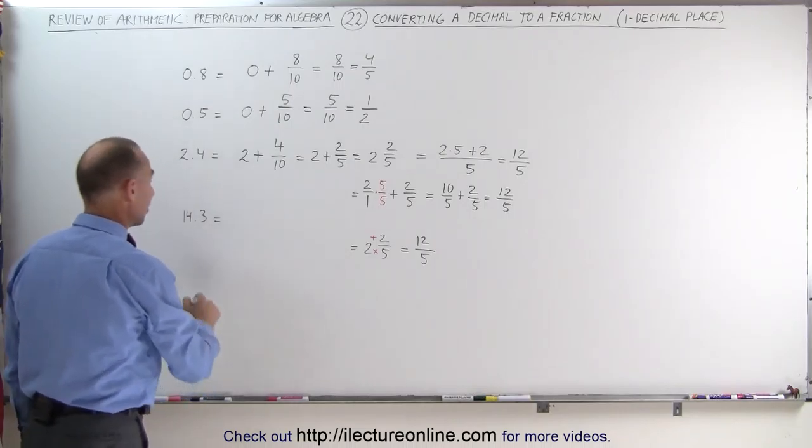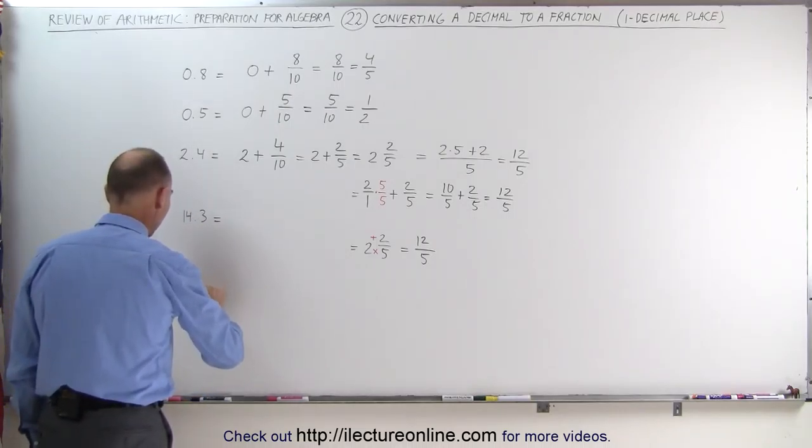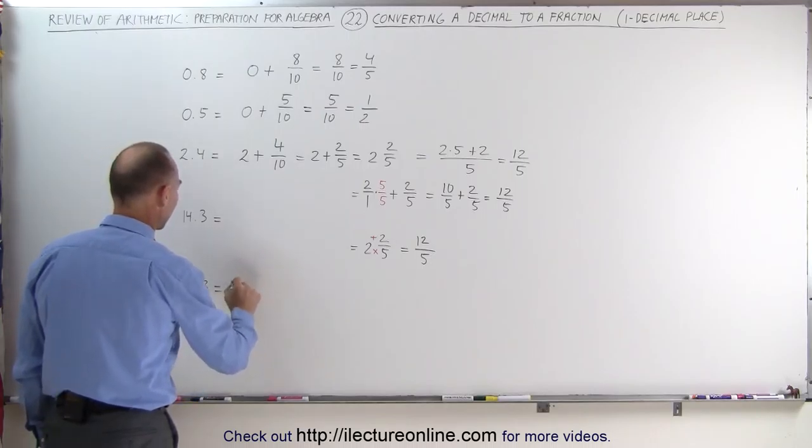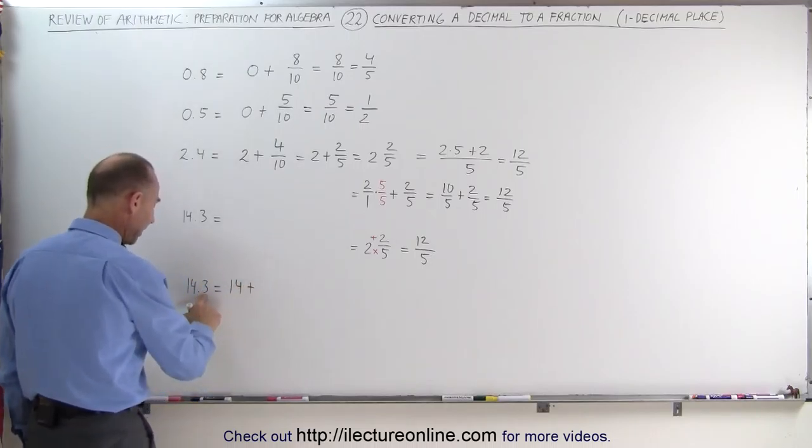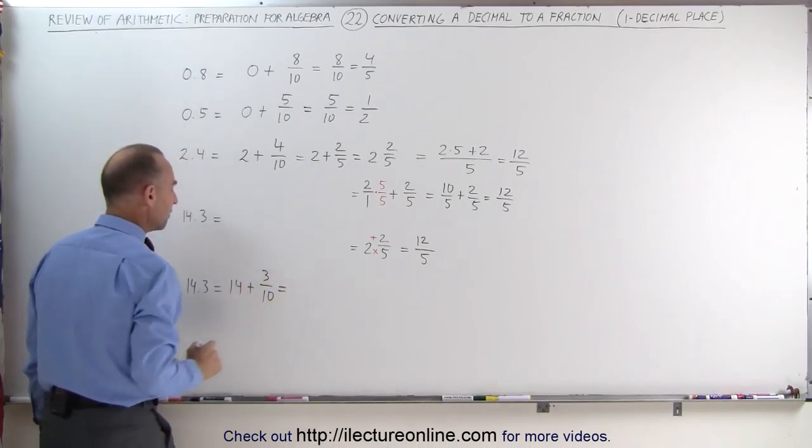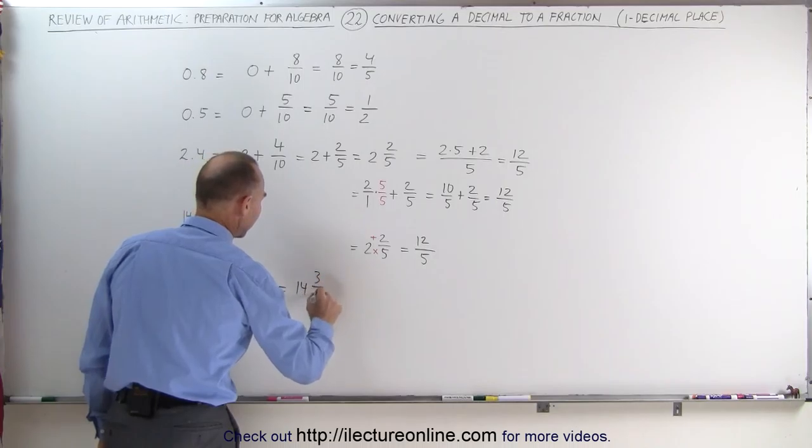Now let's try it over here with this number. So 14.3 is equal to, well first of all we write it as 14 plus 3 tenths, therefore 3 divided by 10. Now we can write that as a mixed number, 14 and 3 tenths.